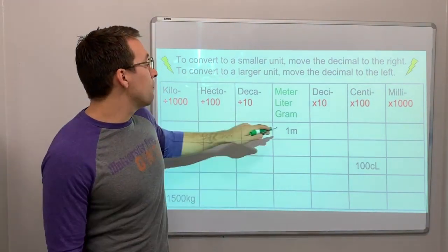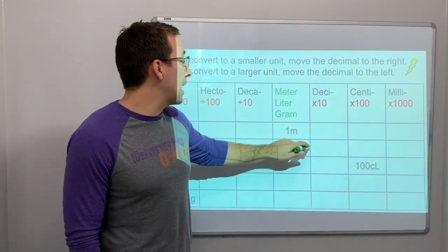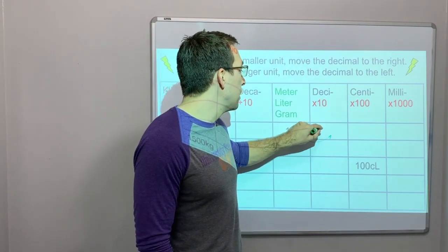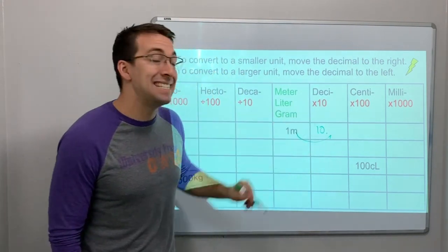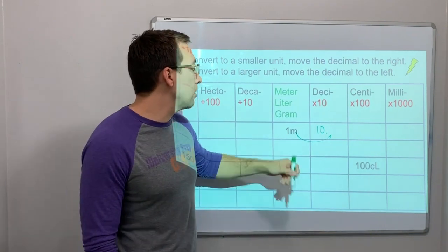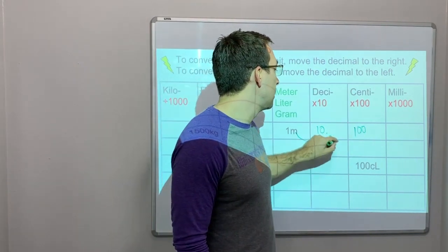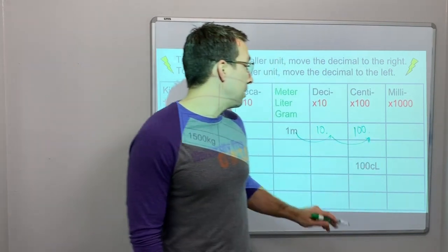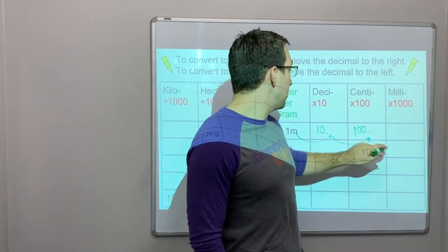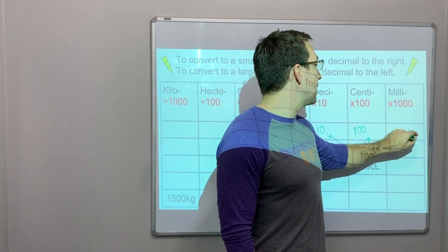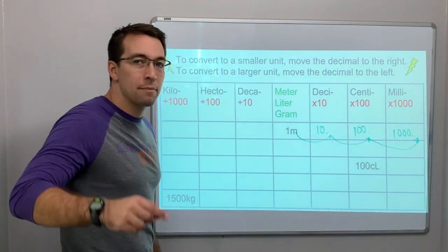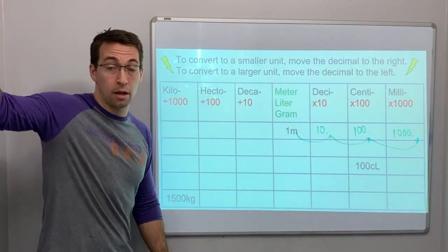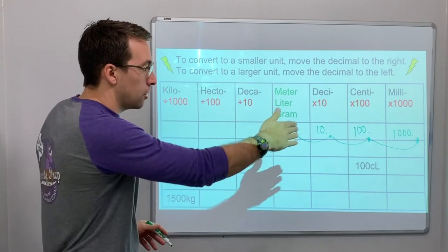So, if we have one meter, that means we have, we'll move it one place, 10 decimeters. One meter is 100 centimeters. One meter is 1,000 millimeters. Do we see how the decimal moved one time, each one digit, each conversion?